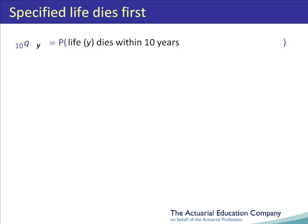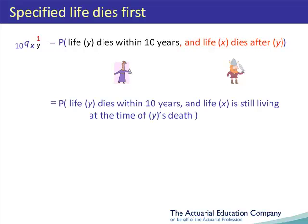So we have said what has to happen to Mary for the event to happen, but now what has to happen to Fred? We bring back Fred's symbol X and the 1 over the Y, as we need to know what this number is in order to pinpoint the precise timing of Fred's demise. As this number is a 1, this tells us that Mary dies first and so Fred dies after Mary. We could alternatively say that Fred has still to be alive at the time of Mary's death, so we could interpret the notation as meaning the probability that Y dies within 10 years and X is still living at the time of Y's death.